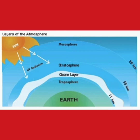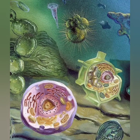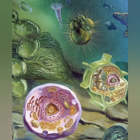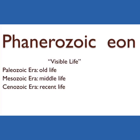In the Proterozoic Eon, there is evidence that eukaryotes and multicellular organisms appeared on Earth. To summarize: Earth froze into a snowball, the ozone layer thickened, and multicellular organisms evolved.